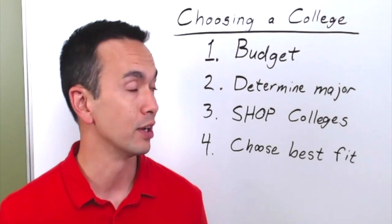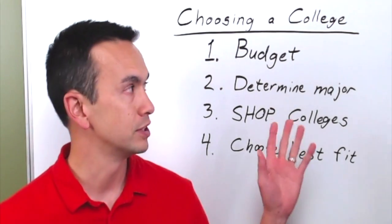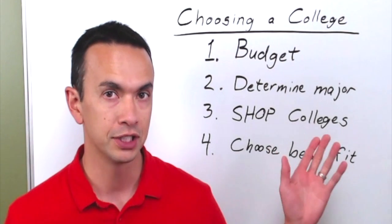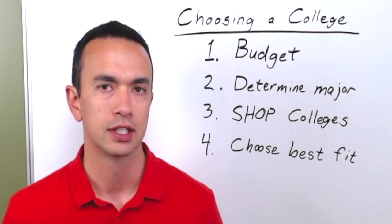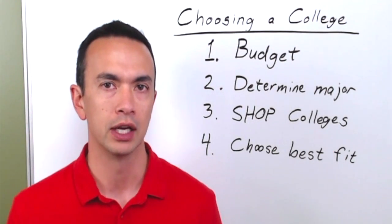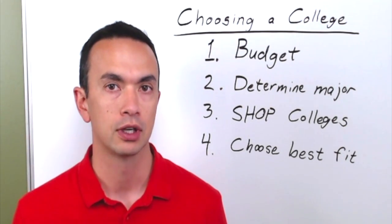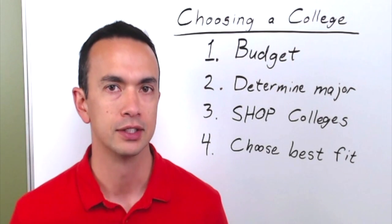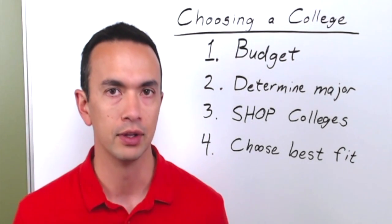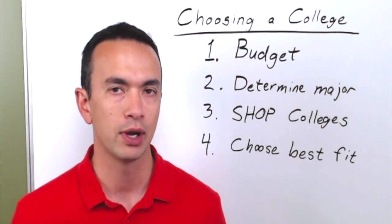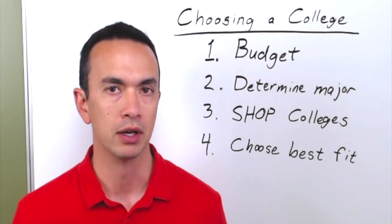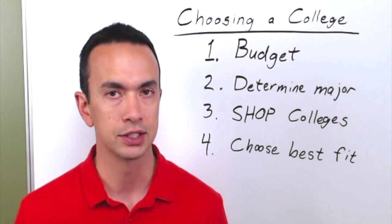If we flip things around and start with a budget - it's kind of like getting pre-approved for a home - you're determining how much college you can afford. That takes into account the amount of 529 savings you have, the amount of scholarships you could potentially get,